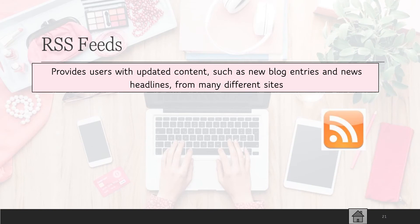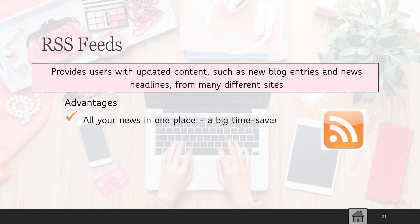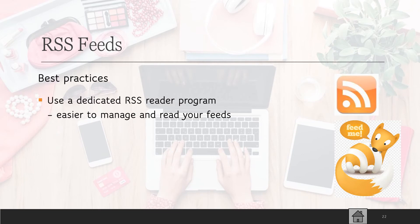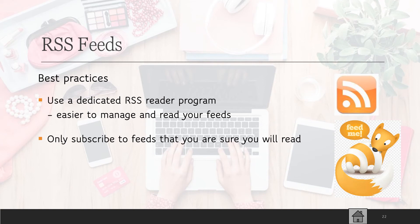Another useful aspect of e-communication is RSS feeds. This allows you to have updated content — for example, if there's a blog site you follow, you can be notified whenever there's a new entry, or whenever there's a news headline or topic that interests you. The advantages are that all your news is in one place, it saves time, and it avoids spam. The disadvantages are that you can subscribe to too many feeds and be overloaded, and sometimes graphics and photos are not included. Best practice is to use a dedicated RSS reader program and only subscribe to feeds you are sure you will read.